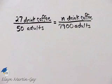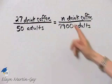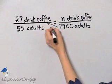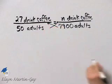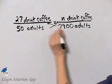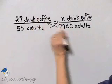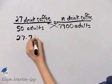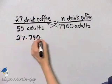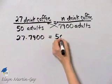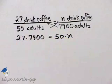We have our proportion set up. Let's now solve for n. We'll first set cross products equal, dealing with the numbers only: 27 times 7,900 is equal to 50 times n.